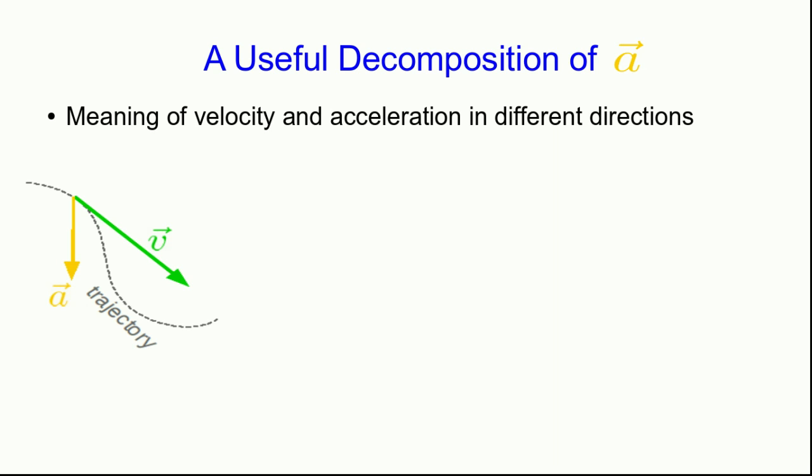And that's a useful way to decompose the acceleration vector when something is going around a corner and speeding up or slowing down. We saw that it's useful to decompose the acceleration vector into a parallel component and a perpendicular component.